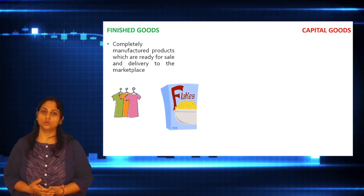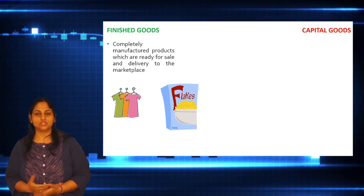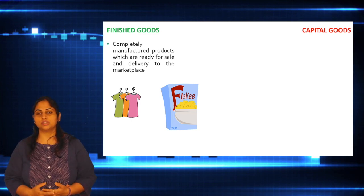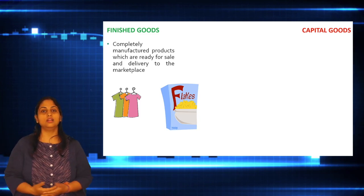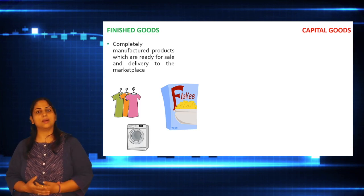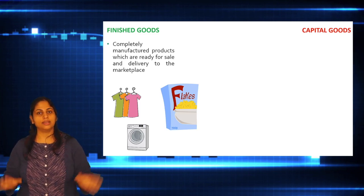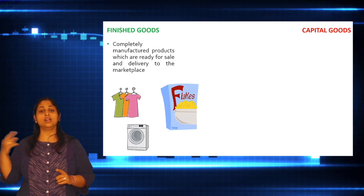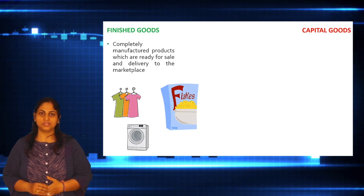Another example is cornflakes — a finished product that has been packaged and processed, with no further value addition. It will go to the house, we will mix it and eat it. Similarly, a washing machine is ready and will go to the house. So that is the finished goods category.